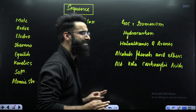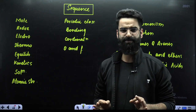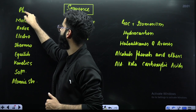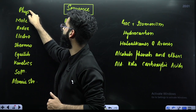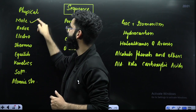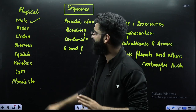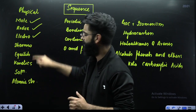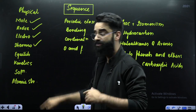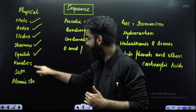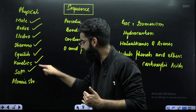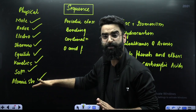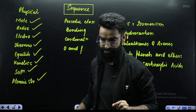What has to be the sequence of chapters you are supposed to follow? If you are starting Physical Chemistry, you have to start with the Mole Concept. Once done with Mole Concept, go to Redox Reactions. Once done with Redox Reactions, then comes Electrochemistry. After Electro, Thermodynamics. Then Equilibrium. Then Chemical Kinetics. Then Solutions. And at the end, Atomic Structure. This has to be the sequence for your Physical Chemistry.